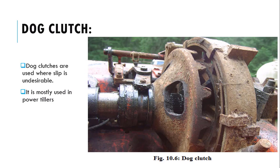The dog clutch is a very rugged type where there is no slippage. It is used where slippage is undesirable — for example in power tillers carrying heavier loads. We do not want any slippage; we want it to carry the full load. In the dog clutch, gears with voids are provided so that power transmitted is completely transferred without any loss.